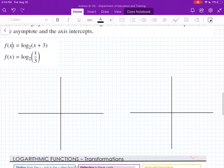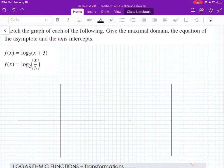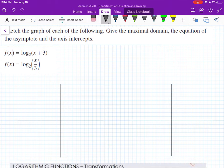So here we've got two here. Sketch the graph of the following. Give the maximal domain, so domain is the x values and the equation of the asymptote and axis intercepts. So we'll get into our first one here. First, we've got log₂(x + 3).